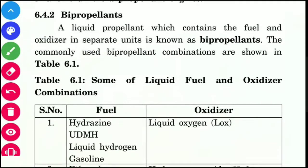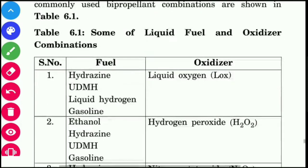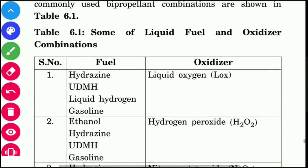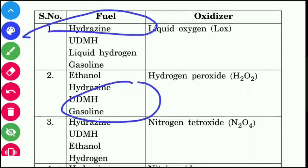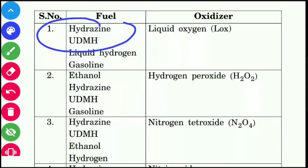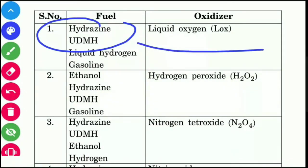Bipropellants contain the fuel and oxidizer in separate units — separate tanks. Examples of bipropellant combinations include liquid hydrogen with liquid oxygen, and UDMH (unsymmetrical dimethylhydrazine) with liquid oxygen.